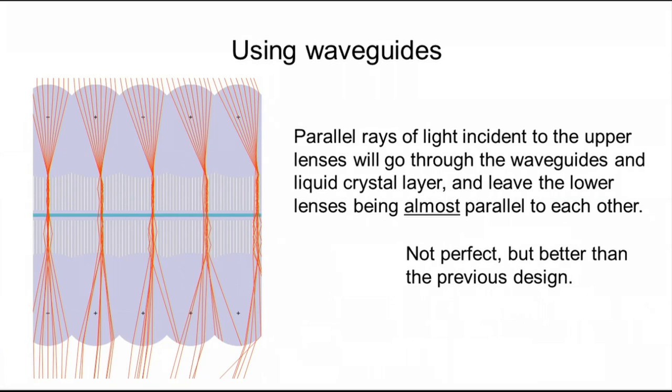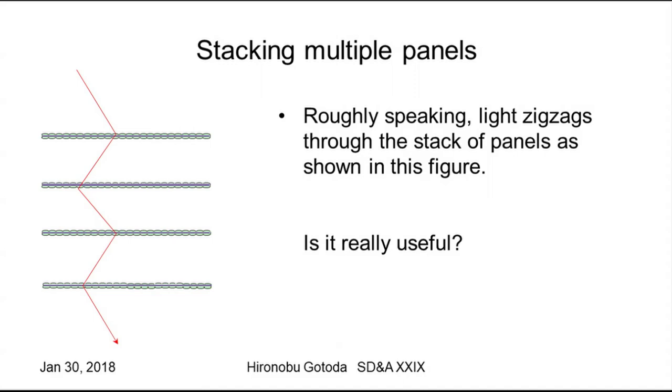The entire optics is a little bit complicated, but we can simply understand that light comes here and refracts and goes in this way. We may understand the basic behavior of this panel like this way. Light comes here and changes its direction in this way and changes its direction and so forth. The light zigzags through the stacks of panels. Now the question is, is it really useful or not?